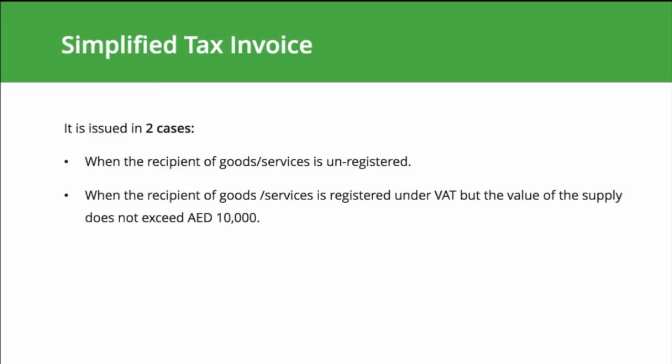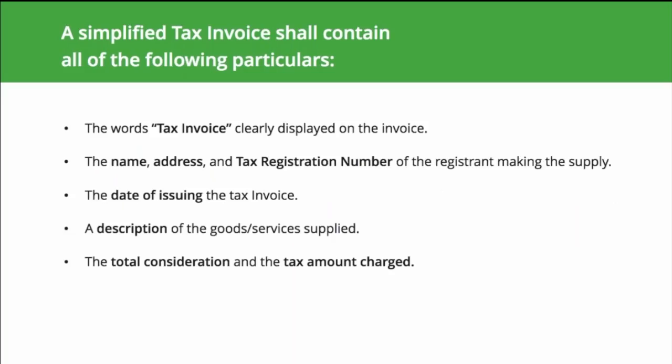Simplified tax invoice. A simplified tax invoice is issued in two main cases: if the recipient of goods and services is not VAT registered, or if the recipient is registered but the value of supply does not exceed 10,000 dirhams. A simplified tax invoice must contain the words 'tax invoice' clearly displayed, the name, address, and tax registration number of the supplier, the date of issue, a description of goods and services supplied, and the total consideration and tax amount charged.